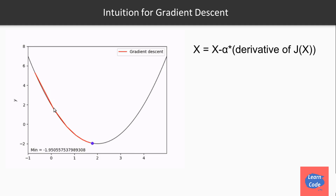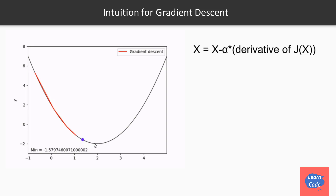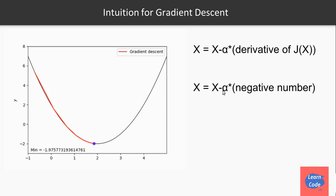At different points of the graph, we get different slopes. And since all the slope values on the left side of the minima are going to be negative, we keep increasing x until we reach the minima. So x equals to x minus the learning rate times a negative value.